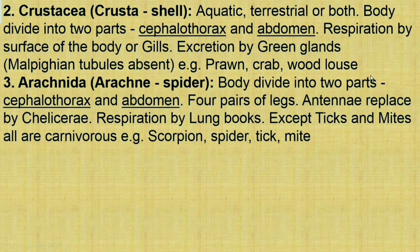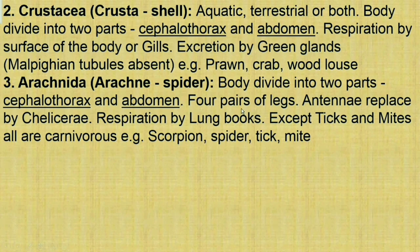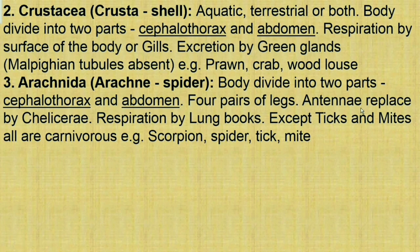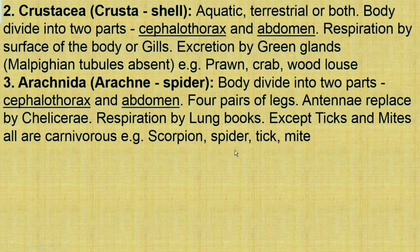The next class is Arachnida. 'Arachn' means spider, so mostly spiders are found in this class. The body is divided into two parts: cephalothorax and abdomen. A special character is four pairs of legs, unlike insects which have three pairs, making it easy to differentiate them. Antennae are absent and replaced by chelicerae. Respiration is by book lungs. Except ticks and mites, all animals of this class are carnivorous. Examples: scorpion, spider, ticks, and mites.